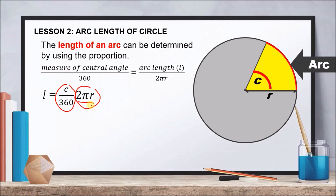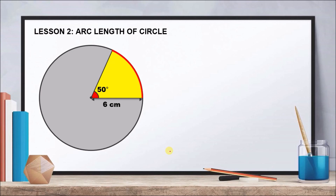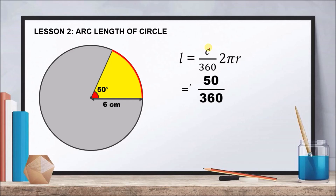We apply this formula to find the length of the arc depending on the central angle. Through the given example, we find the length of an arc with a central angle of 50 degrees and a radius of 6 centimeters, using π = 3.14, with the final answer rounded to two decimal places. Substituting into the formula: (50/360) × 2 × 3.14 × 6.